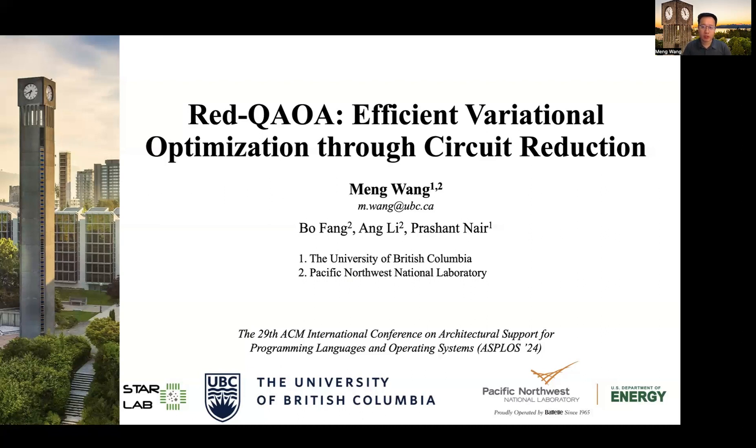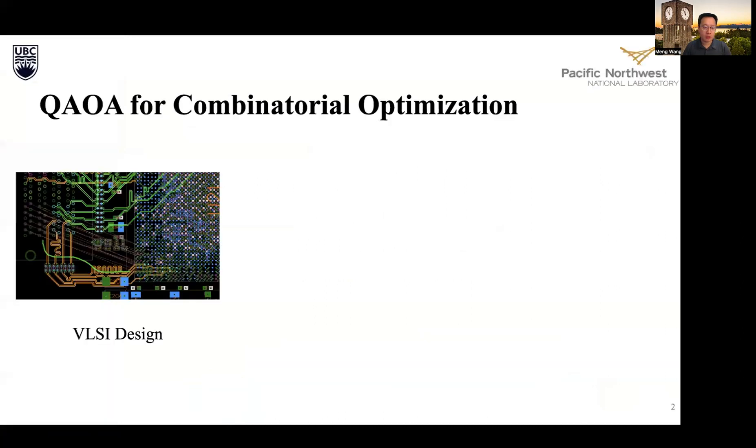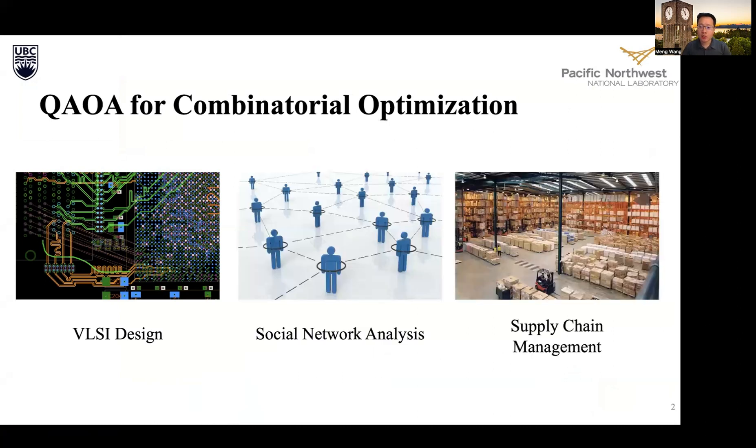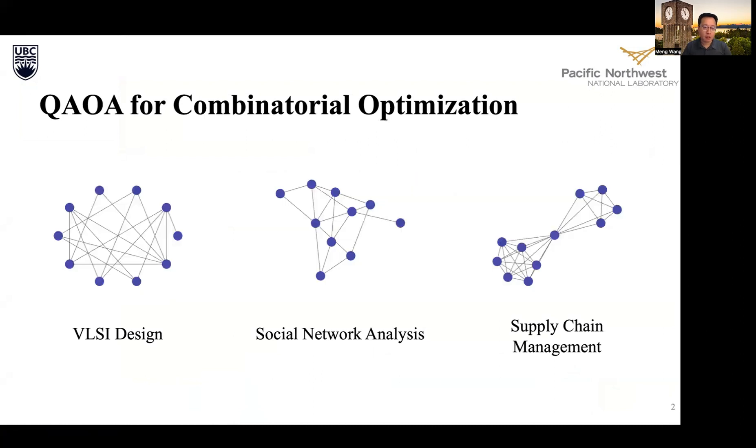We have developed a novel technique called Red QAOA to tackle it. QAOA solves some of the most complex optimization problems, from chip design to networking to logistics. These combinatorial problems get converted into graphs and then being solved.